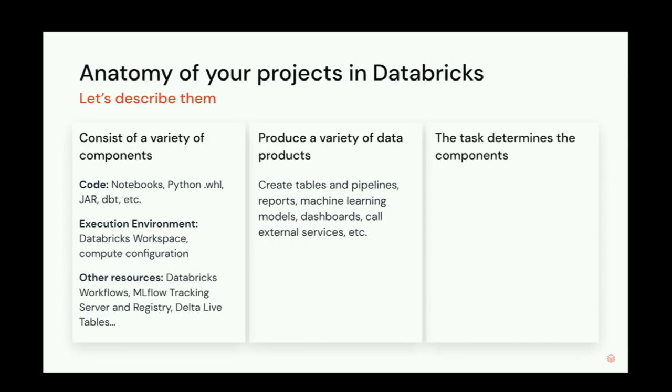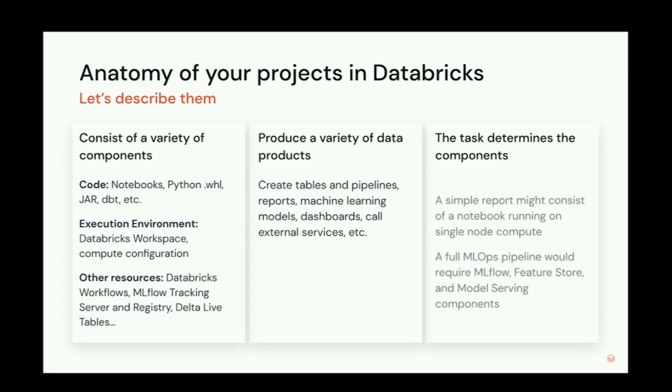What determines which components you need is the task — what you're trying to accomplish. For example, if I'm just running a simple report, I just need a Databricks notebook and a single VM, and run it as a workflow. But if I have an MLOps pipeline, that could be very, very sophisticated. It could have many different dependencies and components that I have to include in that.